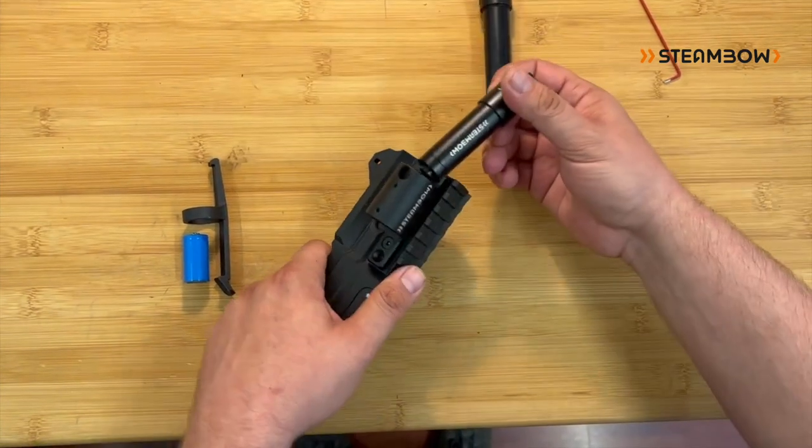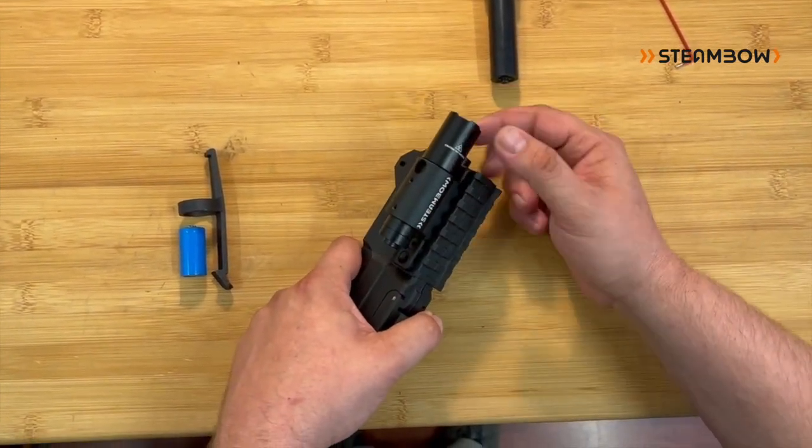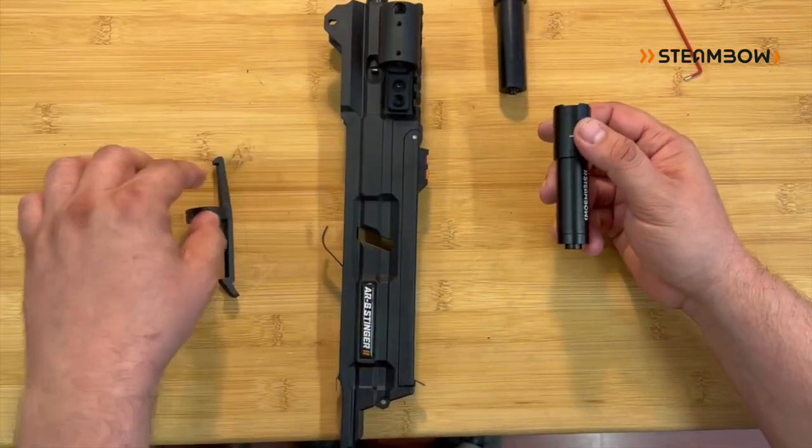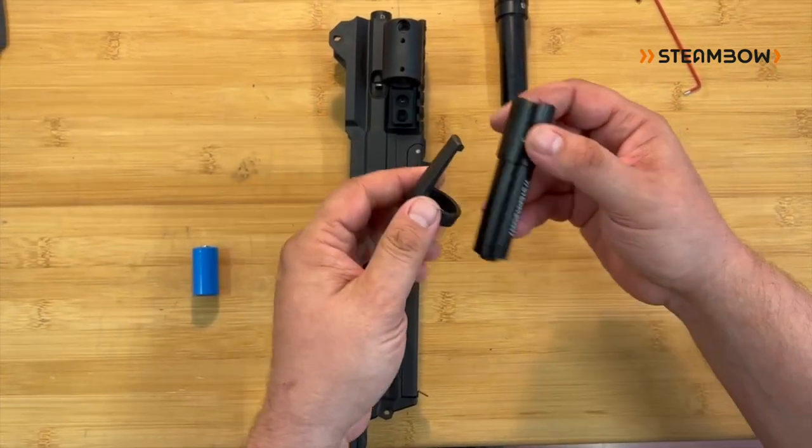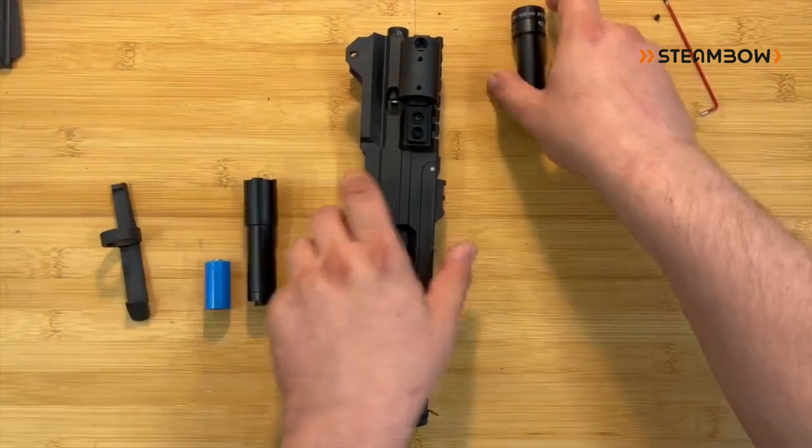Same goes for our tactical flashlight. Also just use the set screws to fixate it. Here you also have the option with our flashlight clip to make this very easy to get it on and off the crossbow.